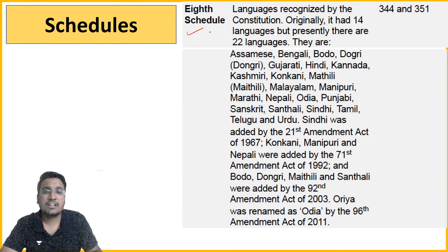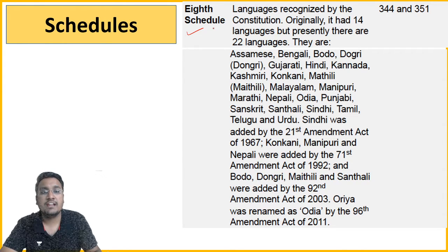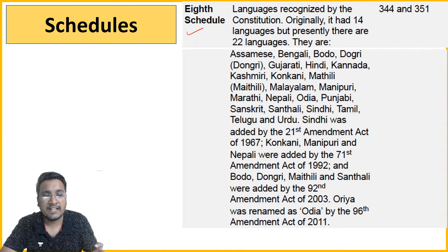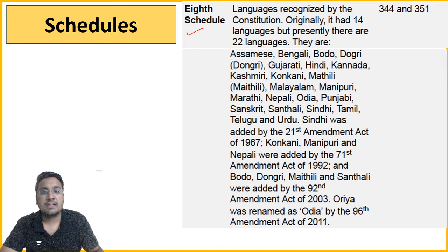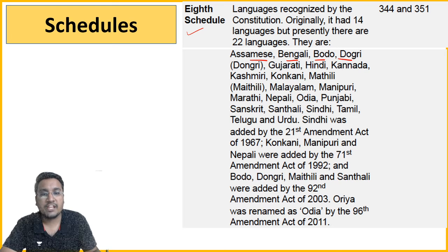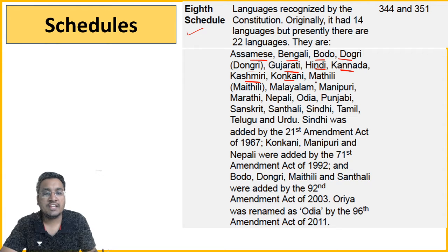The 8th Schedule contains recognized languages recognized by the constitution. Originally there were 14 languages; presently there are 22 scheduled languages. All 22 should be memorized: Assamese, Bengali, Bodo, Dogri, Gujarati, Hindi, Kannada, Kashmiri, Konkani, Maithili, Malayalam, Manipuri, Marathi, Nepali, Odia, Punjabi, Sanskrit, Santhali, Sindhi, Tamil, Telugu, Urdu — total 22 languages.